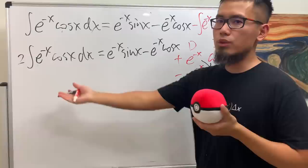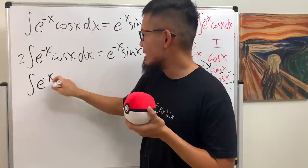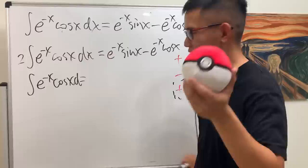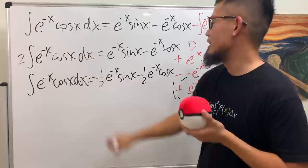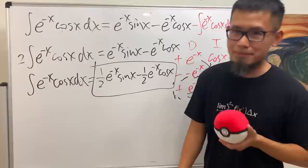This is the repeating situation. We move it to the other side, so we end up with 2 times the integral of e to the negative x cosine x dx equals e to the negative x sine x minus e to the negative x cosine x. We don't like the 2, so we divide everybody by 2. The integral of e to the negative x cosine x dx equals one half e to the negative x sine x minus one half e to the negative x cosine x.